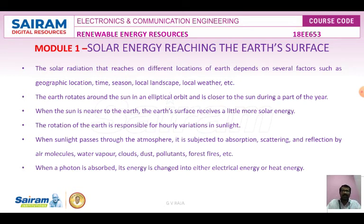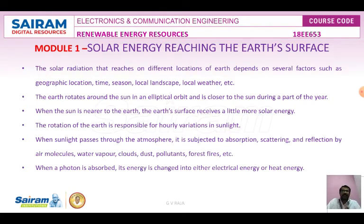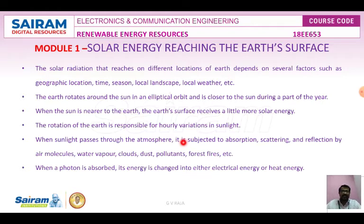Local landscape and local weather. The Earth rotates around the Sun in an elliptical orbit, which is closer to the Sun during part of the year and farther from the Sun during some part of the year. When the Sun is near to the Earth, the Earth's surface receives a little more solar energy. The rotation of the Earth is also responsible for hourly variation in sunlight.